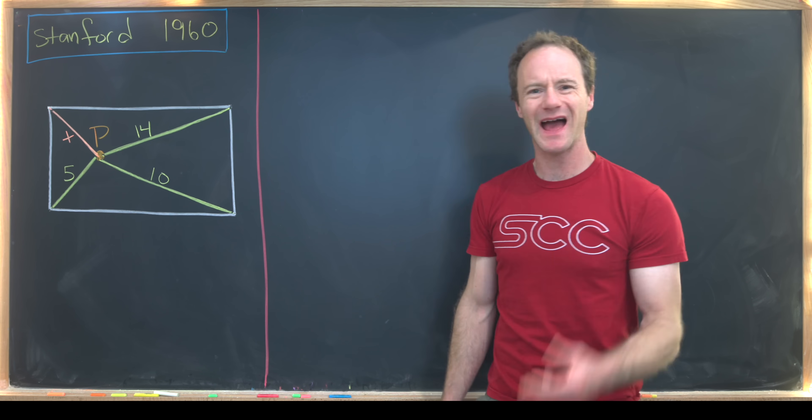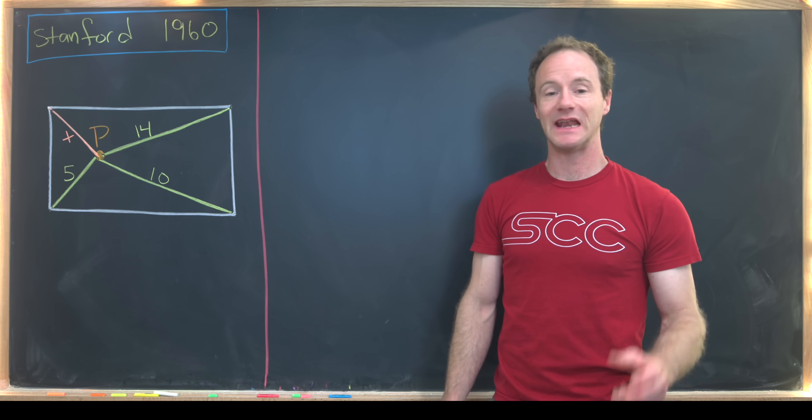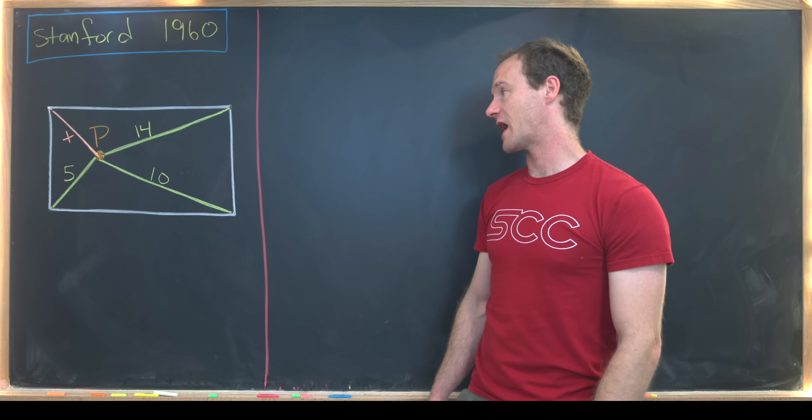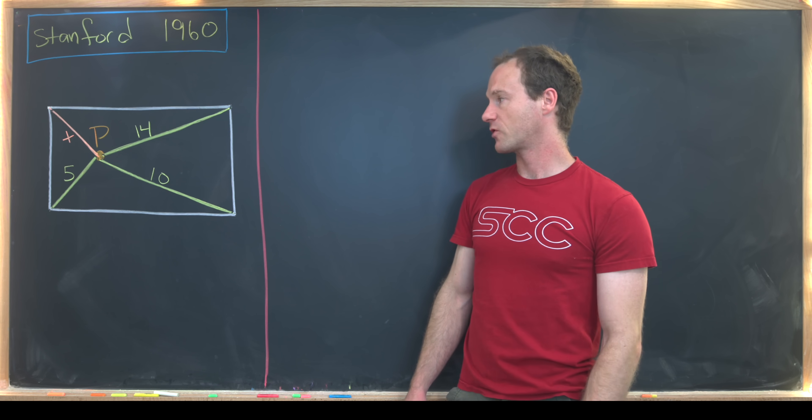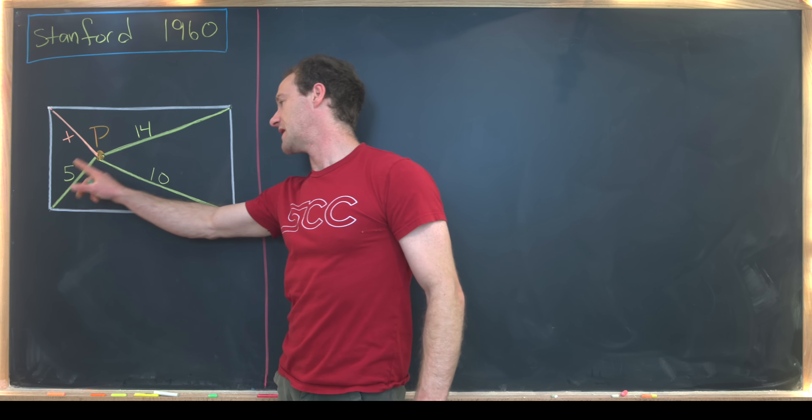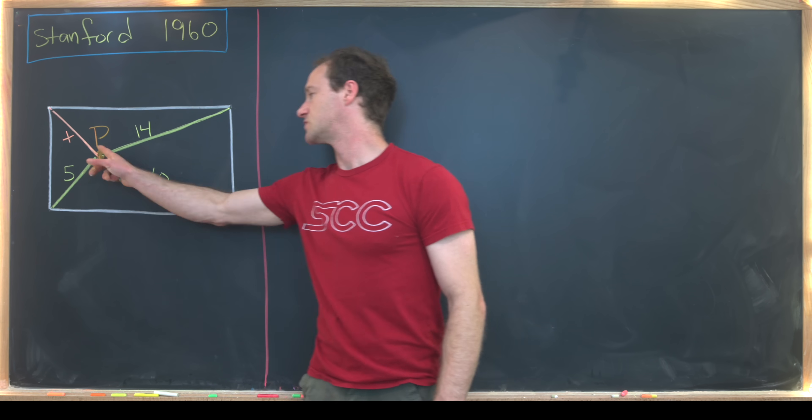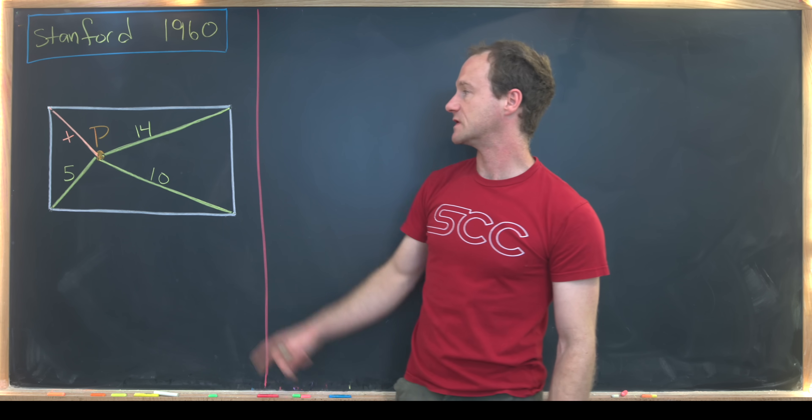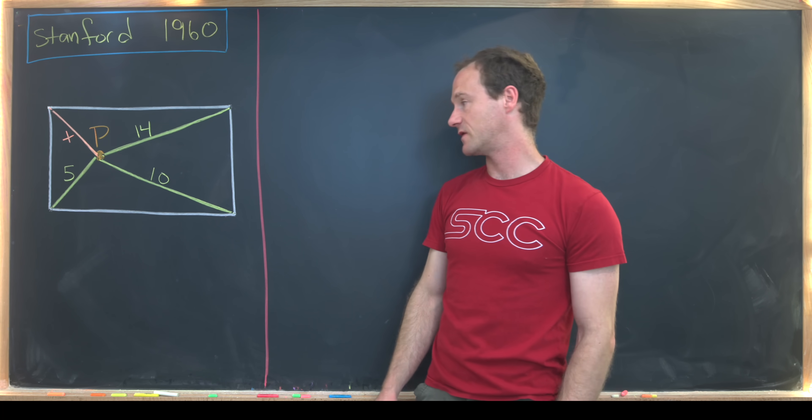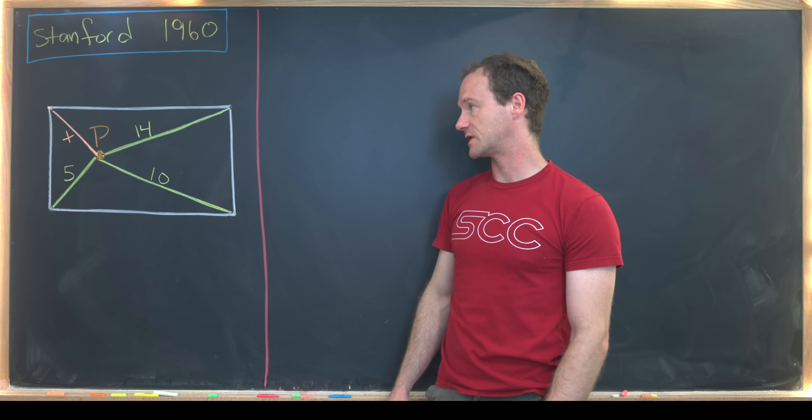We have a rectangle. I haven't labeled the vertices of the rectangle because we don't really need to. Inside that rectangle we have a point which I've called P. We know the distance from P to these vertices is given as follows: it's 5 units from this bottom left vertex, 14 units from this top right vertex, and then 10 units from this bottom right vertex.